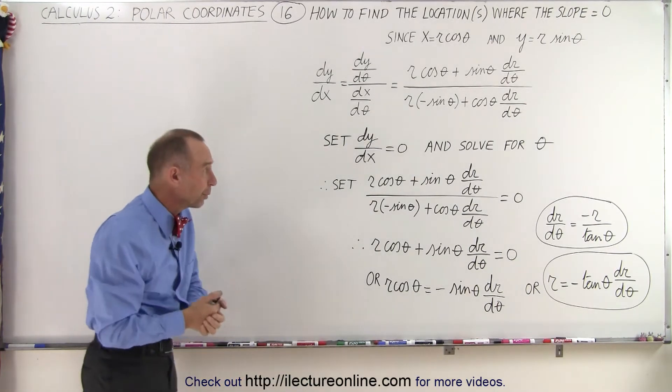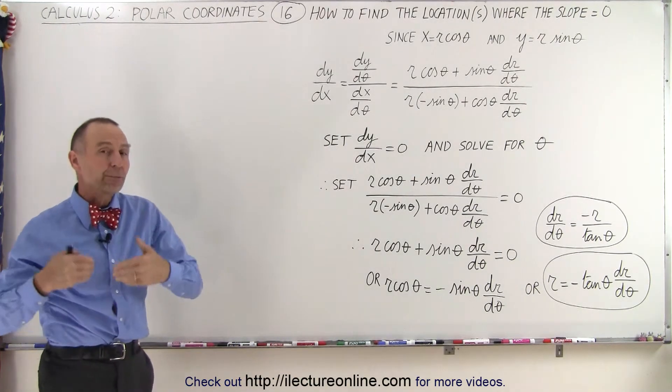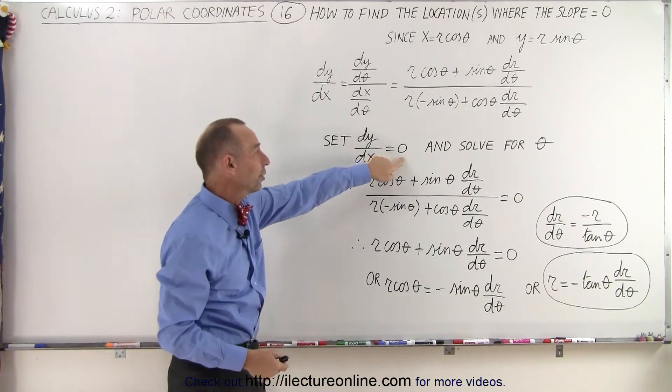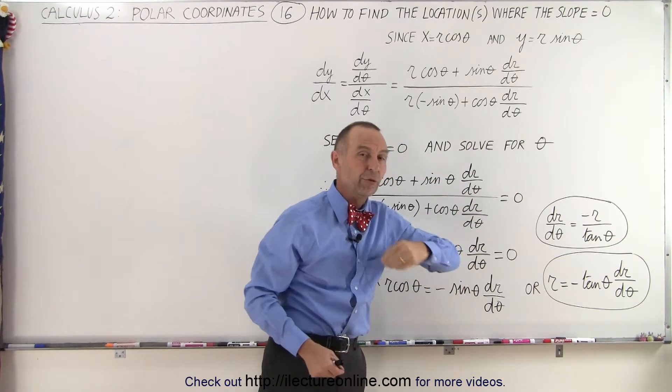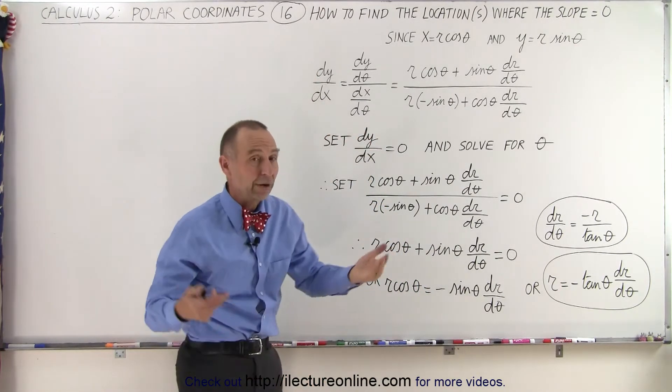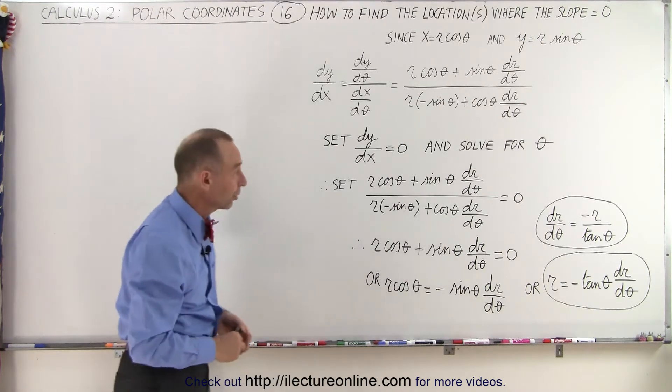which we've seen before in the previous videos. So the approach then is to take that dy/dx and set it equal to zero and solve for theta. For which values of theta is this expression dy/dx equal to zero? Where is the slope of the function equal to zero?